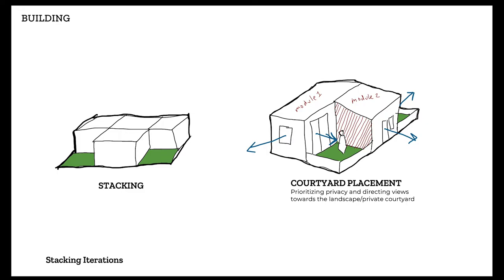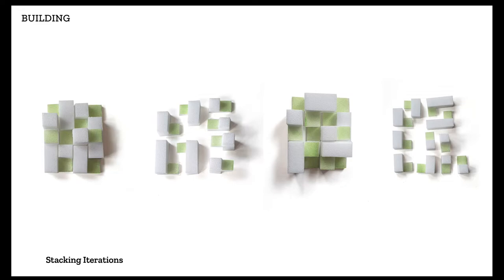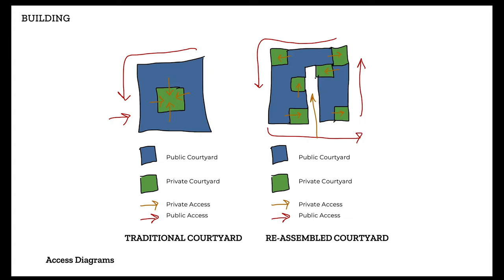The placement of every module in the building was super intentional. I tried to place openings towards desired views but also with as many privacy considerations as possible, so each module was placed such that your courtyard was as private as possible without your neighbors staring straight onto your lawn. I then came up with different stacking iterations. One limitation of building with an amphibious typology is that you're really limited to two floors before the building becomes too heavy to float. I settled on the configuration on the right-hand side, which maximized both privacy and the number of units for approximately 50 people in the building.